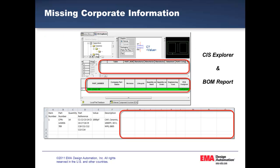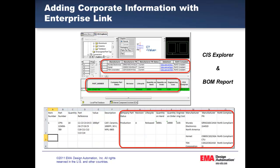Without EnterpriseLink, the user doesn't see complete corporate data in CIS, and incomplete bills of materials are generated. By adding the corporate information via EnterpriseLink, we now see the populated data fields in CIS and more robust information in the BOMs generated from CIS.